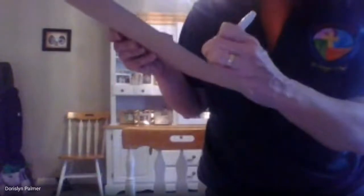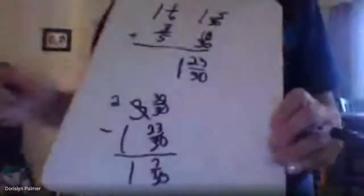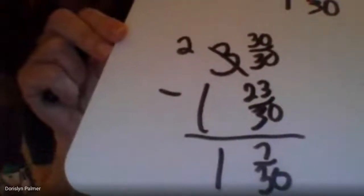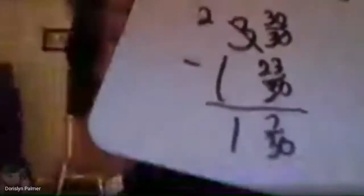Then we're going to take three and subtract one and 23 thirtieths. We have to borrow from the three — we're borrowing one number, right? We're borrowing a one, so we're going to call that one 30 thirtieths. 30 thirtieths minus 23 thirtieths is seven thirtieths, and two minus one is one. So you should have one and seven thirtieths minutes. Make sure you give that a label.